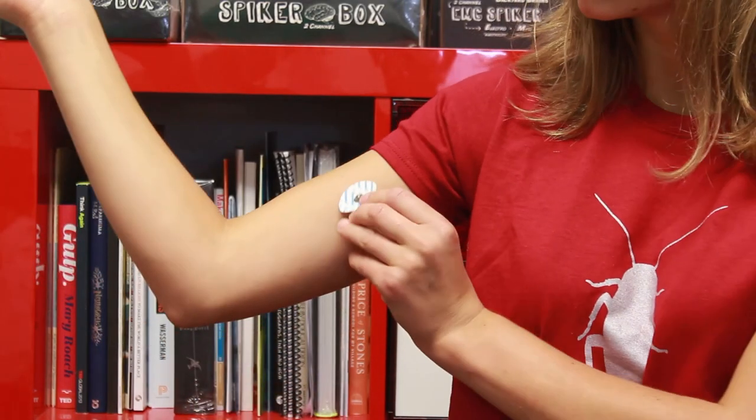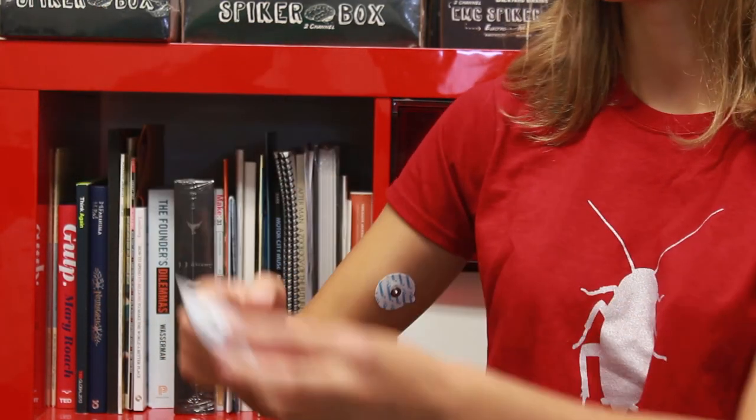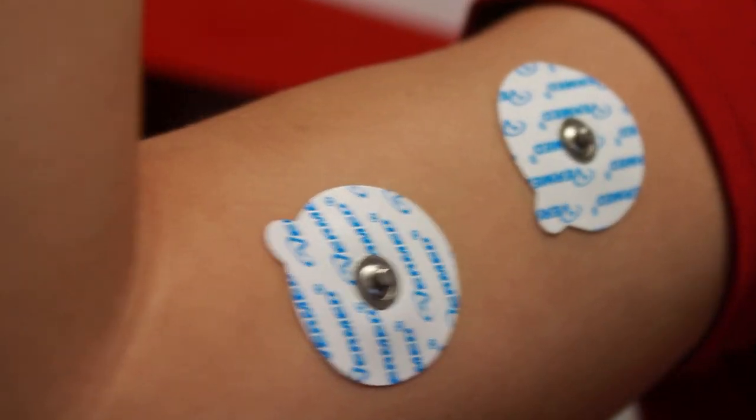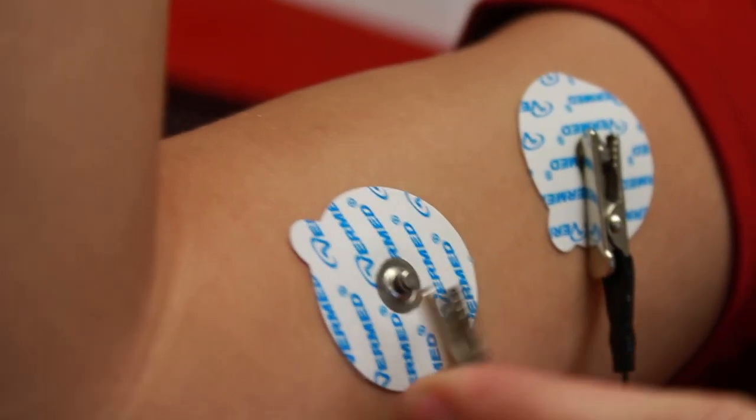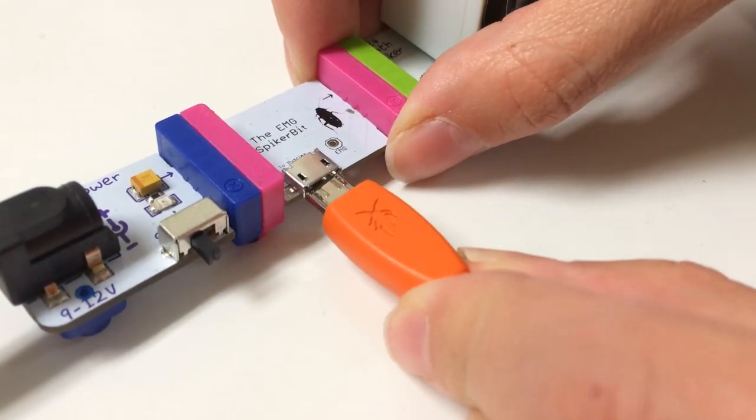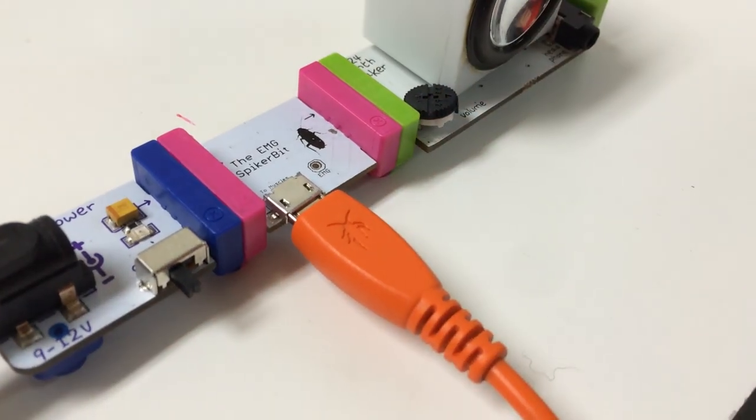Now you can record this electricity by putting two electrode pads on either side of the muscle of interest. Then attach the black and red leads to the electrode pads. There's an additional ground wire that can go anywhere on the body. Now just plug the electrode into the EMG spiker bit and we're ready to go.